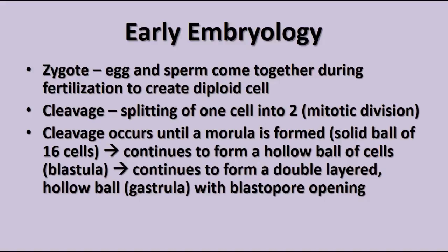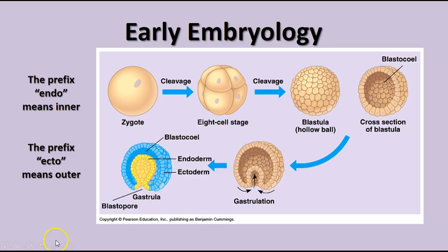Eventually, as the blastula gets a little bigger, part of the blastula starts to push in on one side, forming a double-layered gastrula that has an opening called a blastopore.